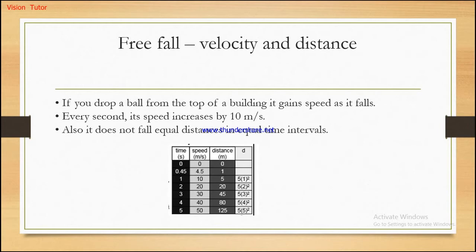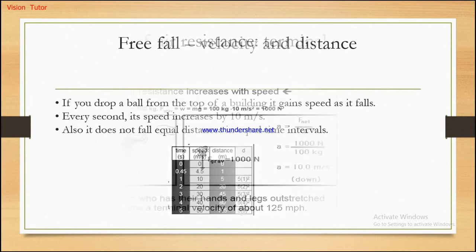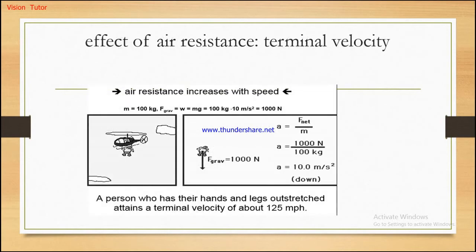To understand this, we use constant acceleration — uniformly accelerated motion equations. In this scenario, you can explain what is going on. What if there is air resistance? When there is resistance, we have terminal velocity.